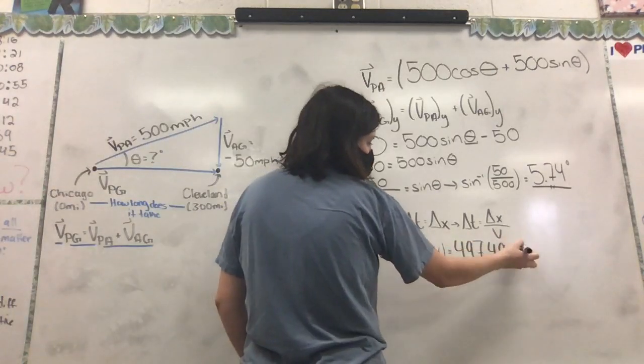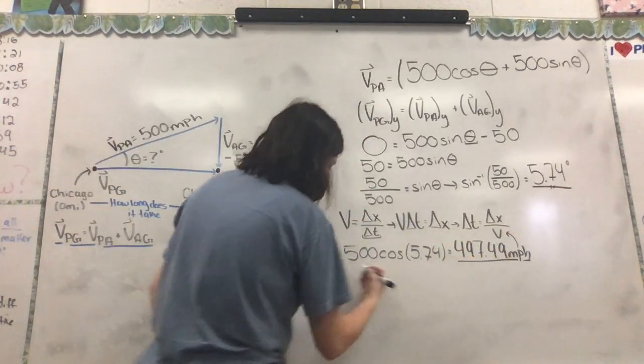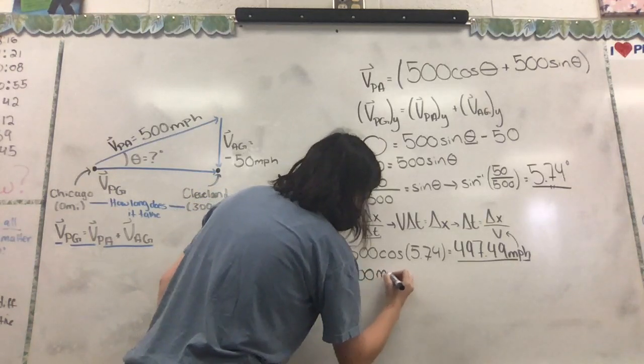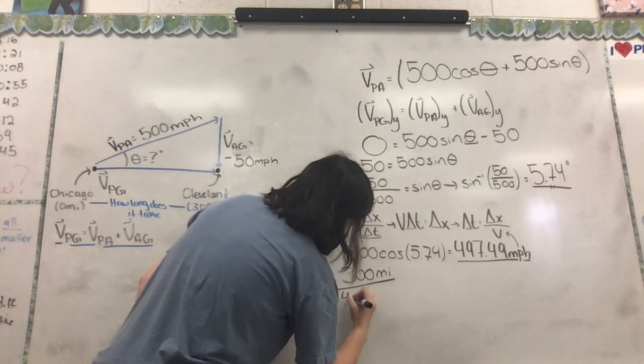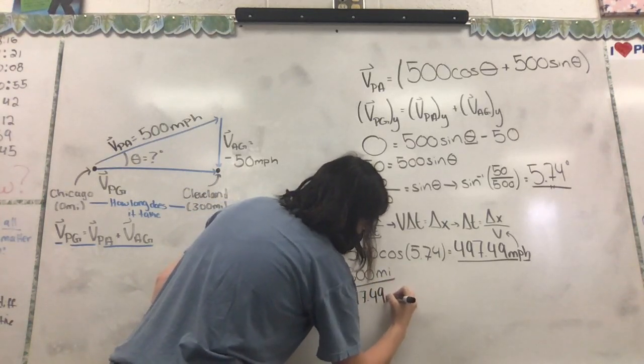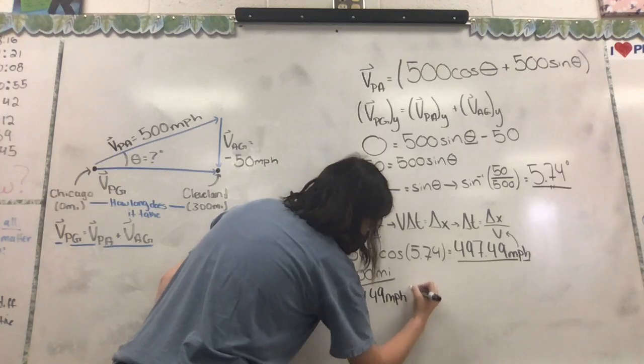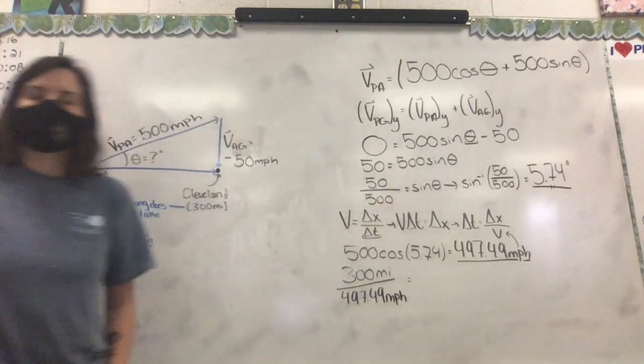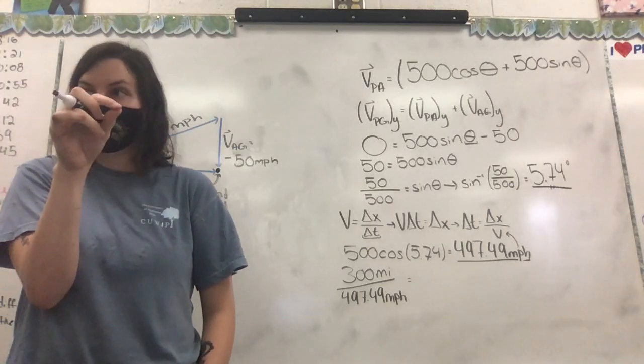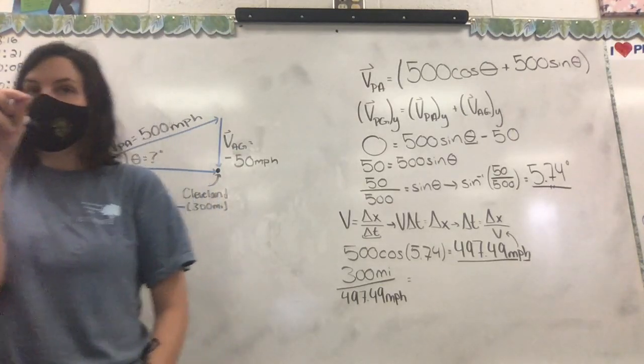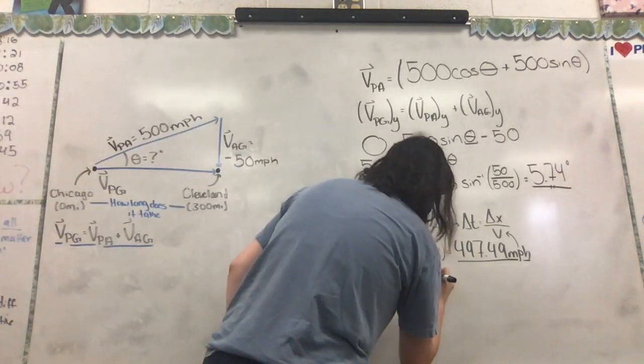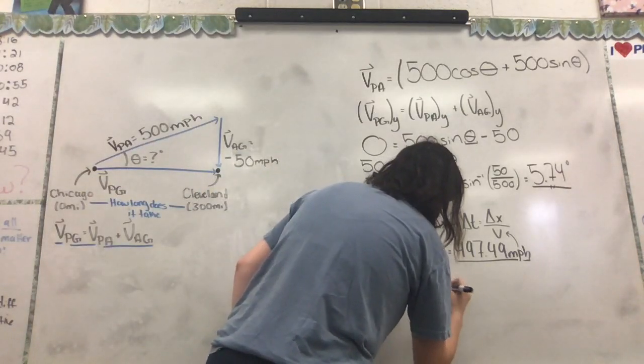So you guys said we went 300 miles, and we're going to divide that by 497.49 miles per hour. Now remember, it's okay if it's a small number because we're in hours, not seconds. Does anybody have an answer? Yeah. 0.60 hours.